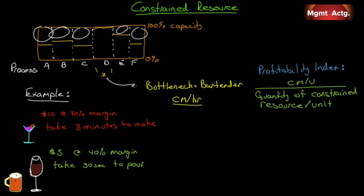Process D is what we call our bottleneck. Process D says the most we can get through is what D will allow, because to get more through we have to increase D's capacity. Just because you hit full capacity on one process doesn't mean your factory is running at 100% capacity — you still have unused capacity in a number of places, but unfortunately we have no extra capacity at D. We've hit peak capacity.